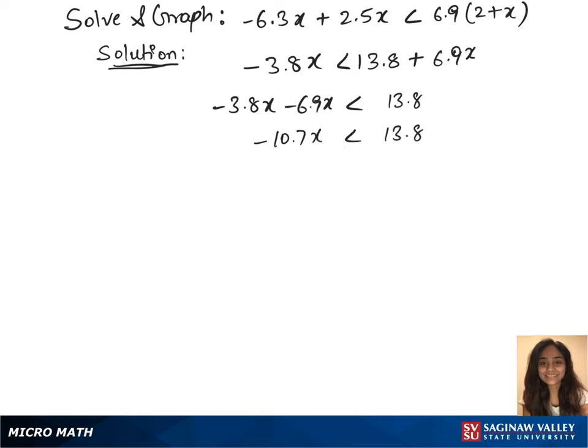And in our next step, we divide minus 10.7 on both sides, so that gives us x greater than minus 13.8 over 10.7. You can take away those decimals by multiplying 10 over 10 on the right, so that gives us minus 138 over 107.